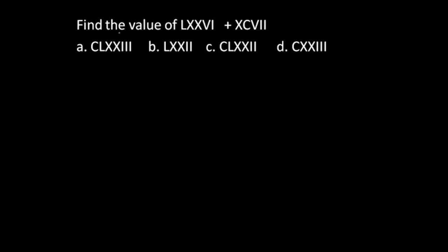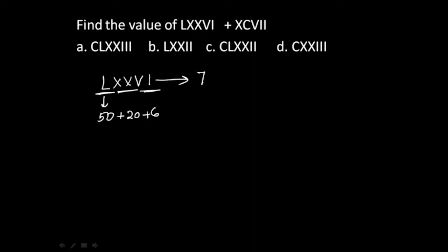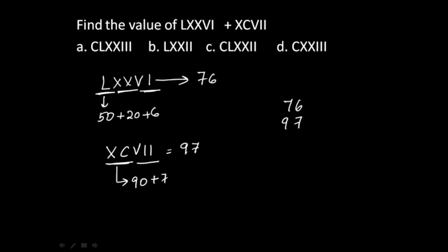Next question: find the value of the sum of two Roman numerals. The first Roman numeral — L represents 50, XX means 20 after 50, and the last part is 6, so 50 + 20 + 6 = 76. The second Roman numeral: XC means 10 before 100, which is 90, plus 7 = 97. The sum of 76 and 97 is 173.